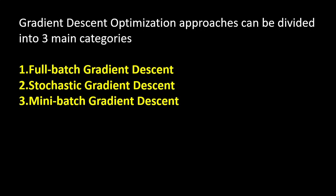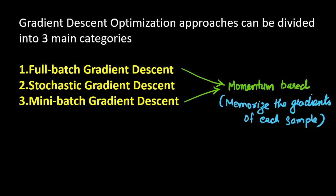Full batch and mini batch are called momentum-based gradient descent. Momentum means we have to memorize the gradient of each sample — we memorize the gradients for every sample, and how long we memorize it determines whether it is full batch or mini batch gradient descent.